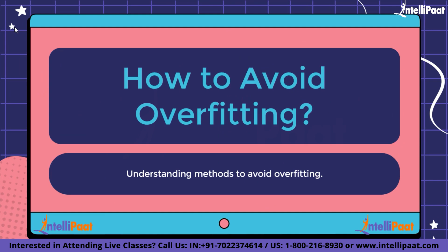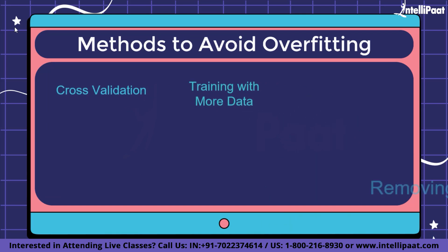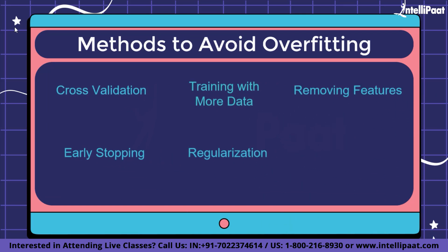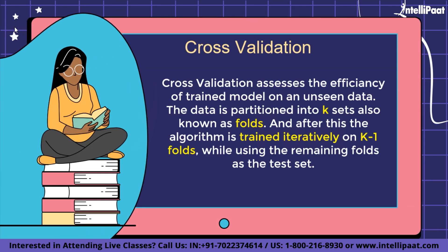There are also several ways to avoid overfitting. The methods available are: cross-validation, training with more data, removing features, early stopping, regularization, and ensembling. Cross-validation is one of the most powerful methods of preventing overfitting. The idea is to use initial training data to generate mini train-test splits and use these splits to tune your model. In standard k-fold validation, the data is partitioned into k sets — also known as folds.